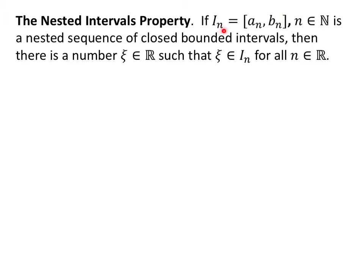We're going to denote them i sub n, which is the closed interval from a sub n to b sub n. So it's a nested sequence of closed bounded intervals. An infinite interval can be closed, but it's not bounded. If we have a sequence of nested closed bounded intervals, then there is a number z — that symbol is xi — such that z is in every single one of these intervals.